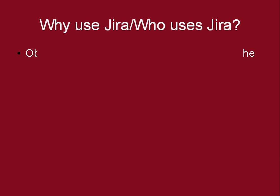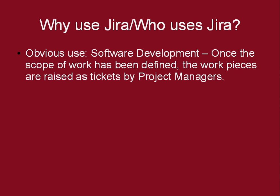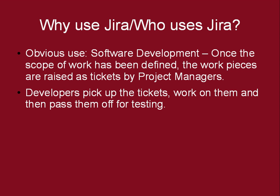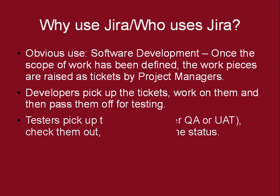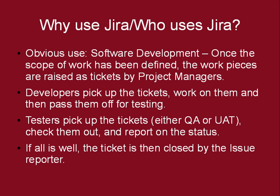Why use JIRA, and who uses JIRA? Well, the main use is software development. Once the scope of work has been defined, work pieces are raised as tickets by project managers — parent tickets underneath which subtasks could exist. Developers pick up the tickets, set to work on them, and when they're done, they pass them off for testing. A tester would come along, do their tests, and say either that's accepted and the ticket can be closed or deployed, or it needs to go back to developers for further work. If all is well, the ticket can be closed by the issue reporter. In JIRA, there is very much an individual-based system — an individual reports an issue, and an individual picks up the issue and resolves it.